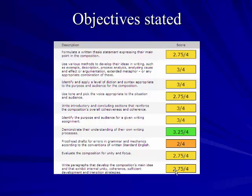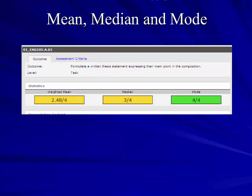We can go up and down the scale for each of the different data points collected and make determinations about where students are. You can see this group has some work to do — proofreading skills still need to be developed. The data collected can include mean, median, and mode. The mean is the average score. The median means half the students are above this mark and half are below it. The mode is the number that most students are hitting — in this demo students are doing pretty well, with many hitting the mode at about 3 out of 4, and the median also around 3.